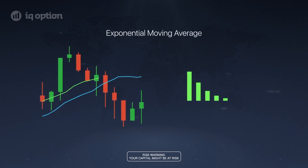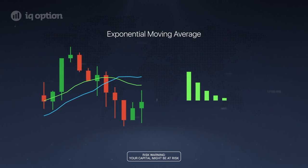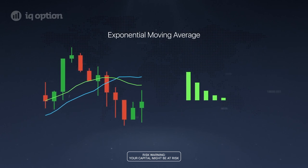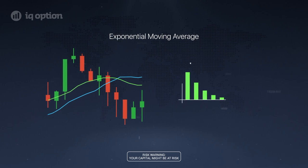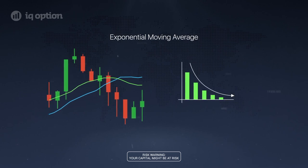The exponential moving average, or EMA, smoothing works by taking into account the current average value on a previous period. With smoothing, the priority decreases exponentially and never equals zero.